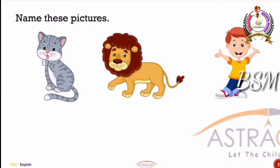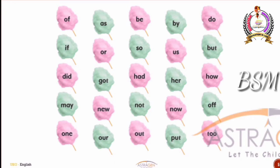Now let us read the three-letter sight words from the screen: but, did, got, had, heard, how, may, knew, not, now, off, one, are.